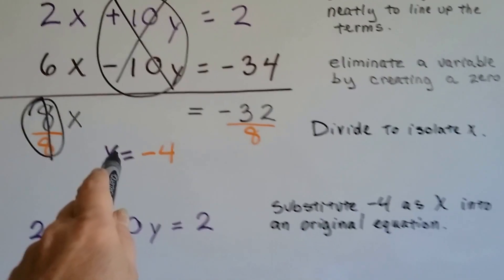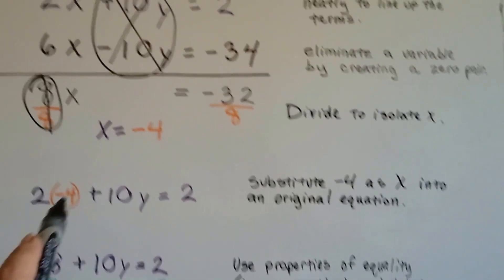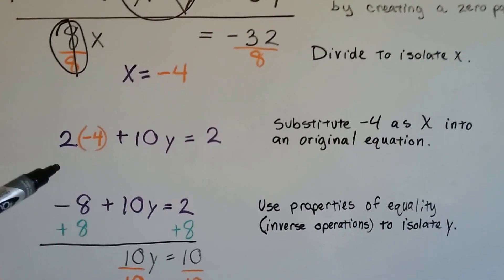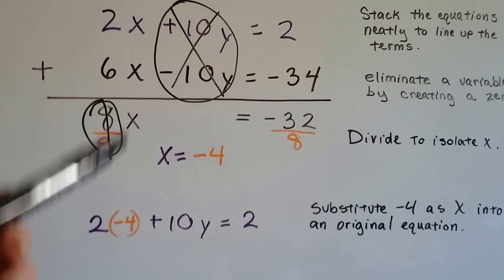You know this created our friend the invisible 1. So we've got a negative 4 for x and we substitute that negative 4 as x into one of the original equations, and I chose the top one. Just it didn't matter which one.